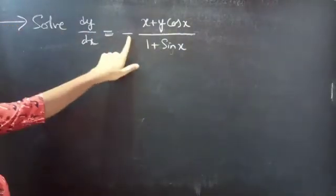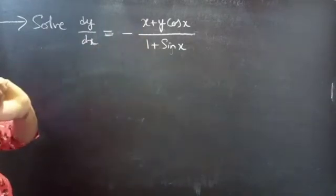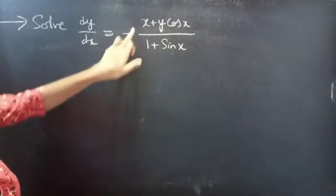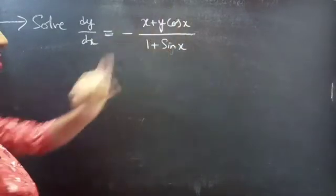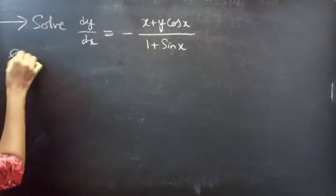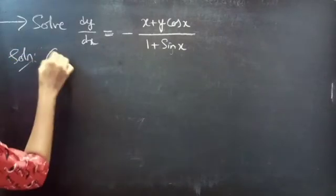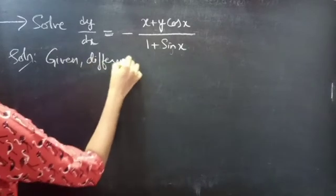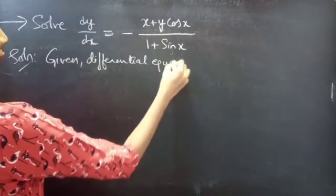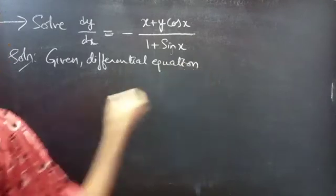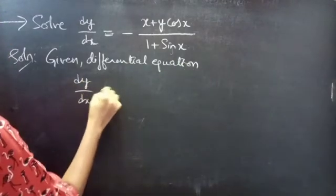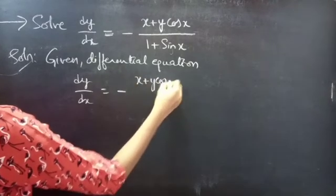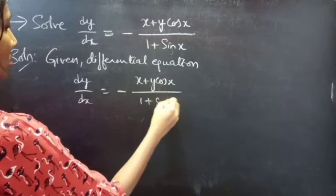So here we don't have minus beside x — we have minus x at the center. So it is considered as minus of the whole expression x plus y cos x, over 1 plus sin x. Solution — given differential equation: dy/dx equals to minus x plus y cos x, divided by 1 plus sin x.